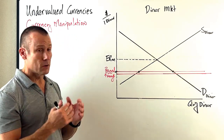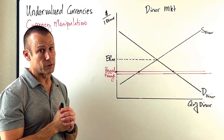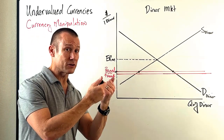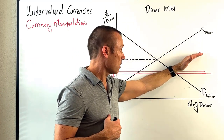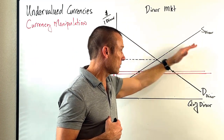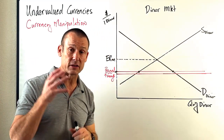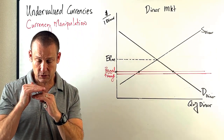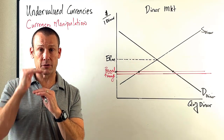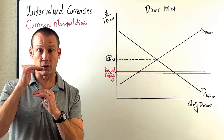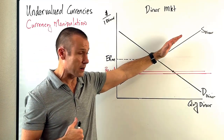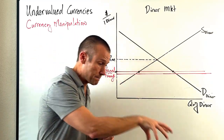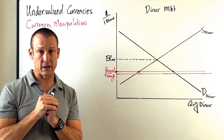With an undervalued currency, what the country does is pretty simple — they print dinar. They can print as much dinar as they want, supply more dinar to the currency markets, and when they supply that dinar, they buy the official reserve assets — in this case, U.S. dollars. That means they draw up, or build up, their official reserve assets. You can see just from the graph: supply more dinar, buy the U.S. dollar, build up those official assets.